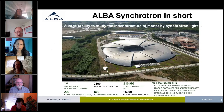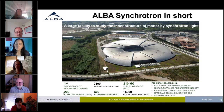Alba is a photon source with eight beamlines, each providing about 5,000 hours of experiments per year. We receive more than 2,000 researchers per year. The facility has somewhat above 200 staff and a total initial investment slightly above 200 million euros.